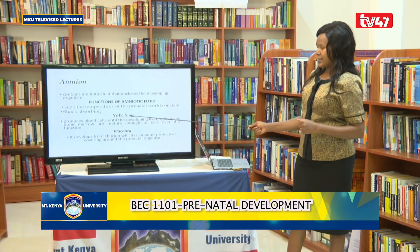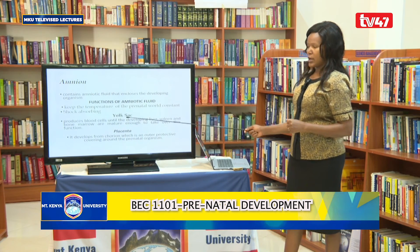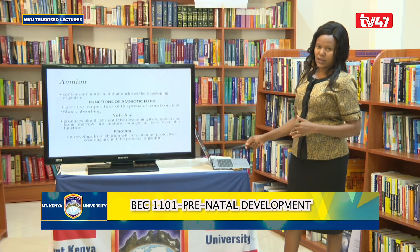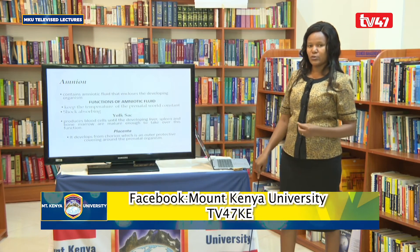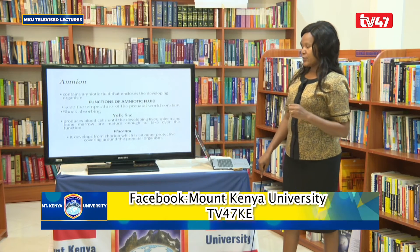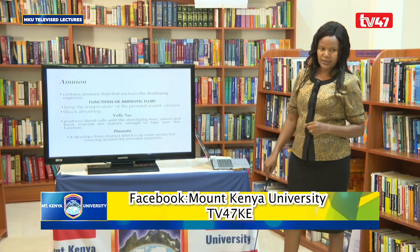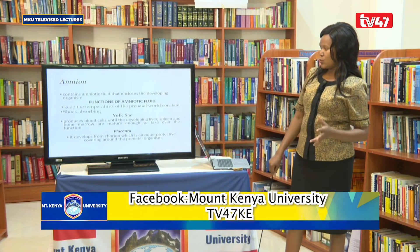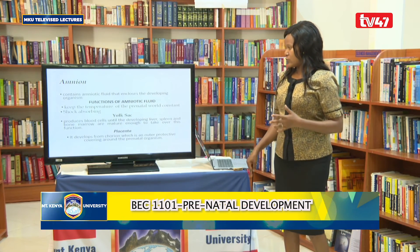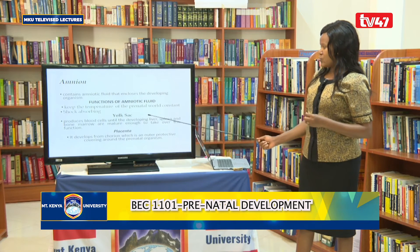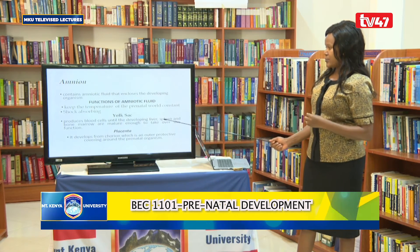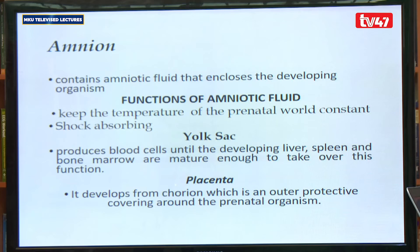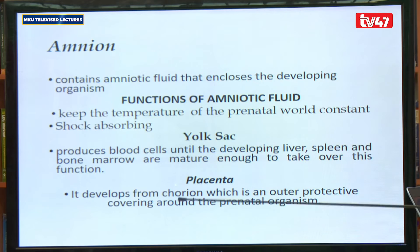The yolk sac is a structure required for the production of blood for the developing organism. This happens during the first few weeks and months of development. It is useful as long as the liver, the spleen, and the bone marrow of that organism are not fully developed to take up the function of blood production. So the yolk sac is meant to produce blood cells.